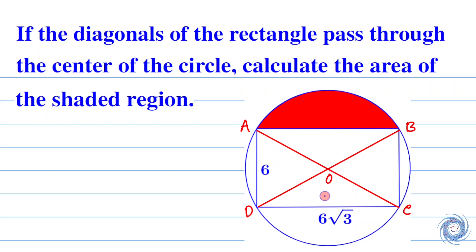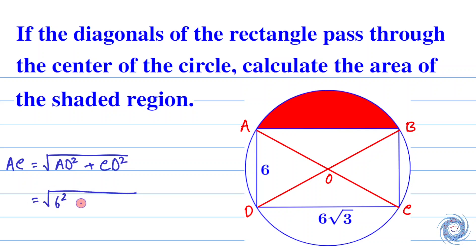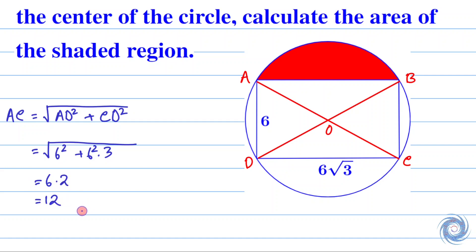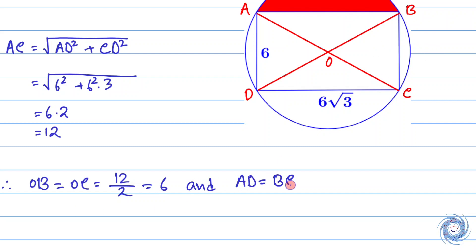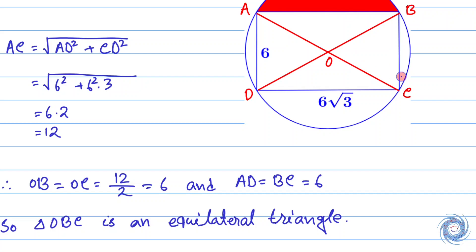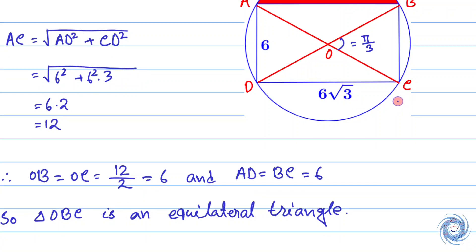Since AC is the diagonal of the rectangle ABCD, the length of the diagonal S is 12. We also know that the diagonals divide each other into two equal parts, so OB equals OC equals 6. Also, AD equals BC, and therefore BC is equal to 6. Since all sides OB, OC, and BC equal 6, triangle OBC is an equilateral triangle. Since OBC is an equilateral triangle, angle BOC equals 60 degrees. AC is the diameter of the circle, and therefore the radius of the circle is OC, which equals 6.